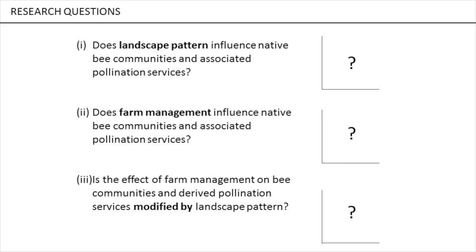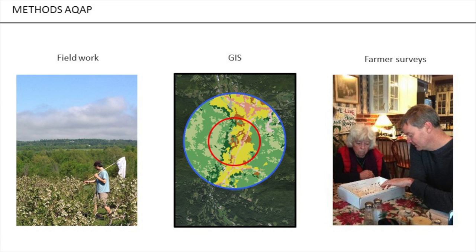Methods, really quickly. We measured pollination services and the abundance and diversity of native bees at 15 blueberry farms in Vermont. We characterized landscape pattern at two spatial scales using GIS, and we created an agricultural intensity index through farmer surveys.